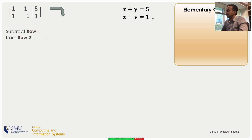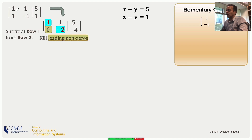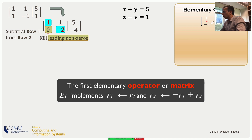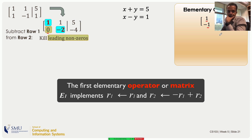To do Gaussian elimination, we form the augmented matrix for x + y = 5 and x - y = 1, then subtract row 1 from row 2 to eliminate the leading non-zero in the second row. The first row of the REF is the same as the first row of the augmented matrix — that is, 1 times row 1 plus 0 times row 2. The second row becomes -1 times row 1 plus 1 times row 2.